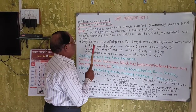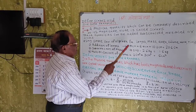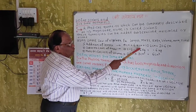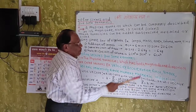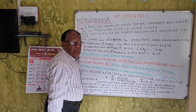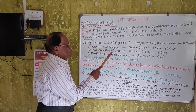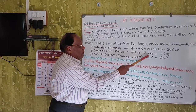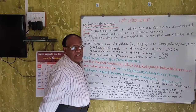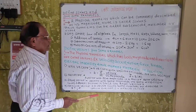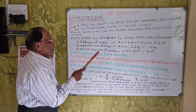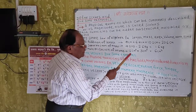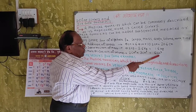For example, addition of length: 4 cm plus 6.4 cm plus 10.2 cm equals 20.6 cm. Subtraction of mass: 4.2 kg minus 2.6 kg equals 1.6 kg. Multiplication of volume: 2 cm³ into 3 cm³ equals 6 cm³.